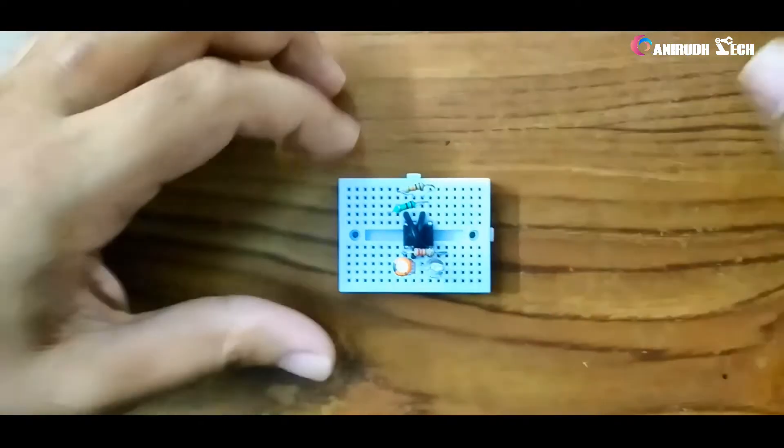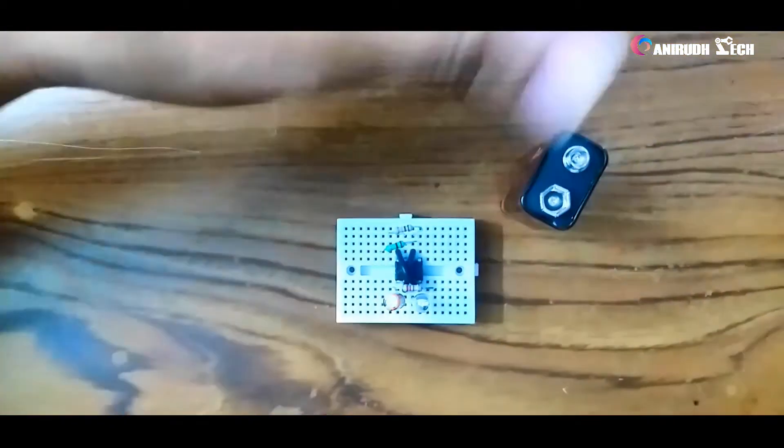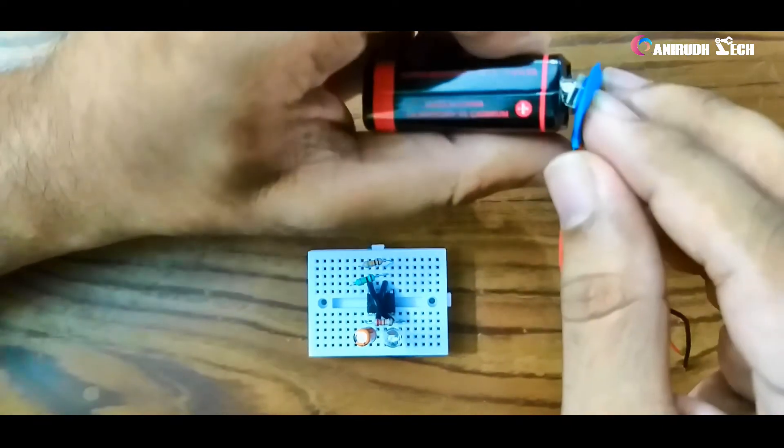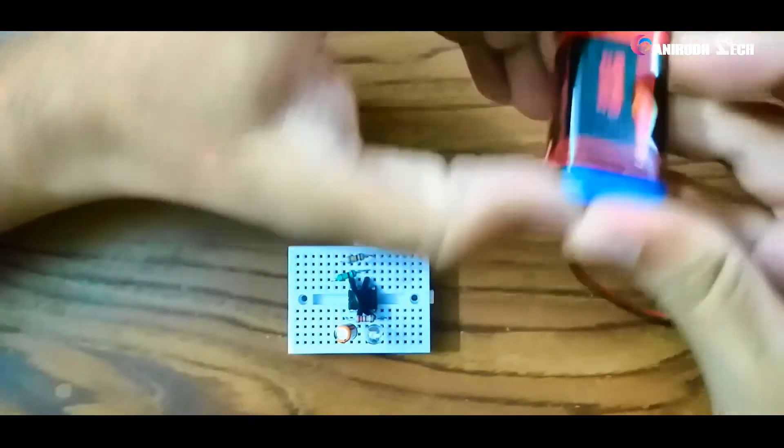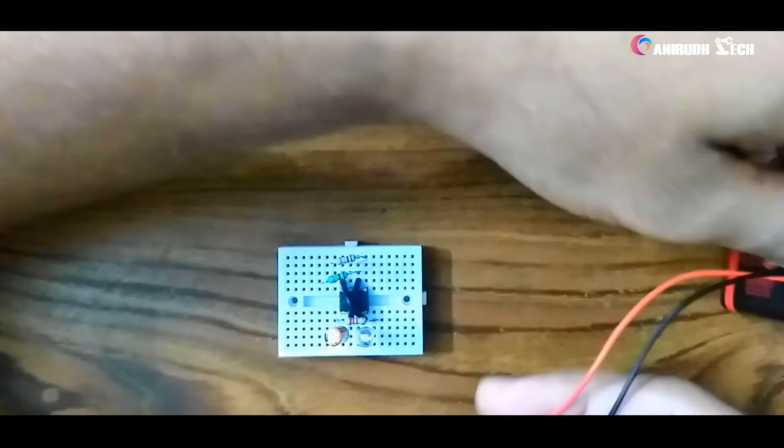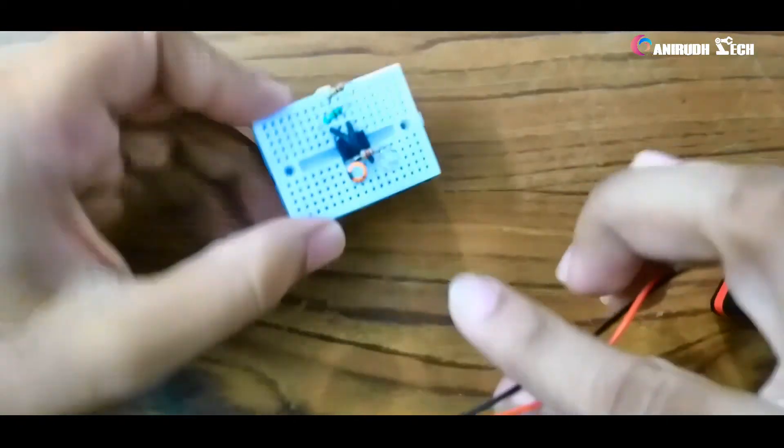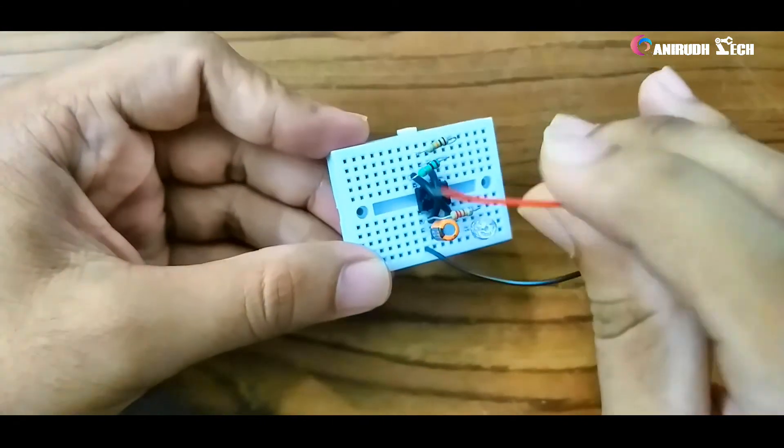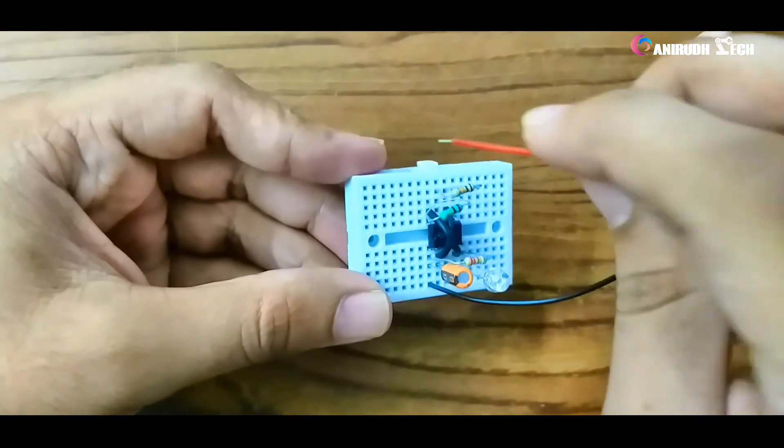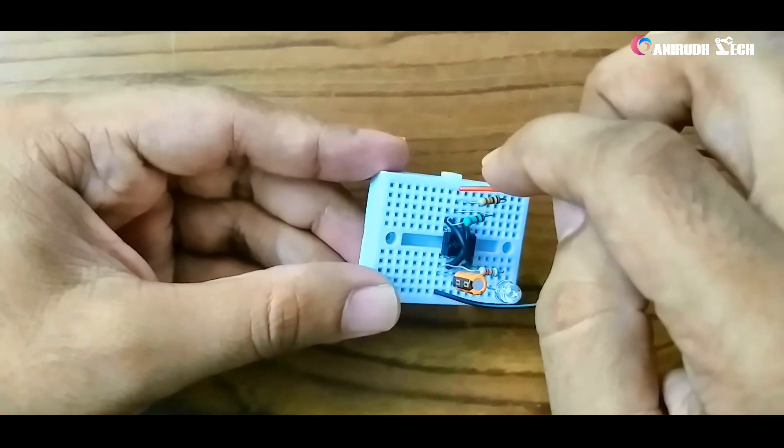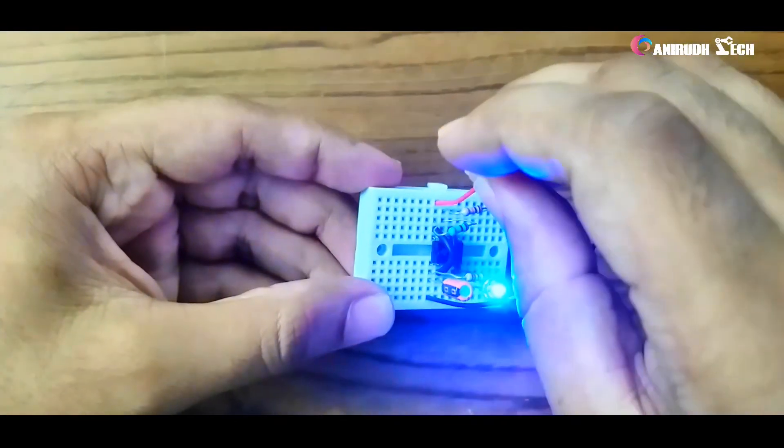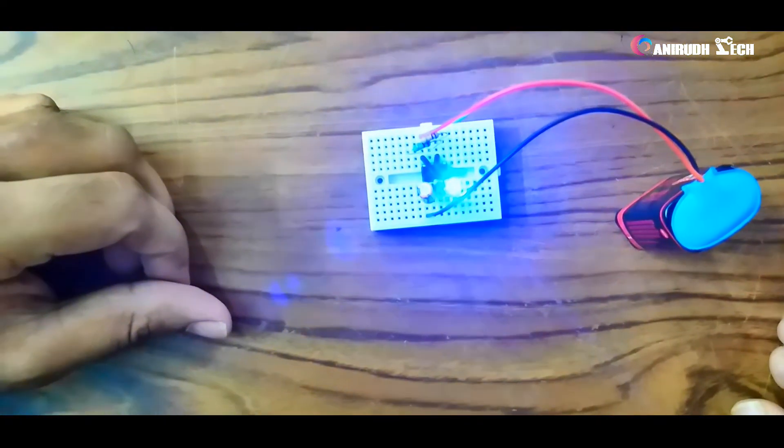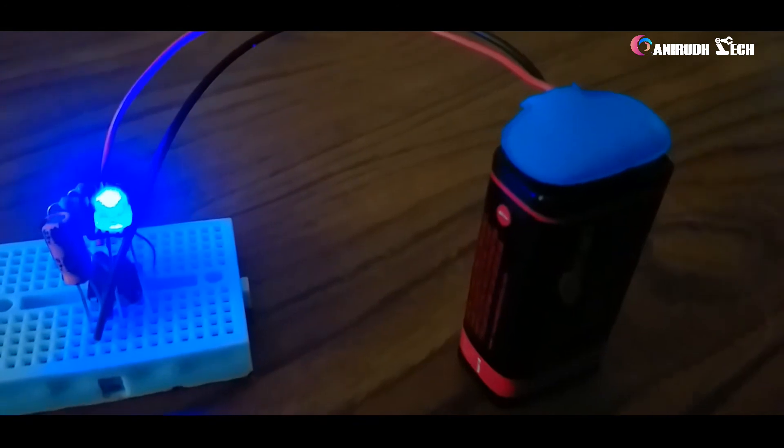Almost done with the connections, now we can power it. Here I am using a nine volt battery. Connect its negative terminal to the first pin of our IC, which is ground, and the positive. We have done it, so I can see this blinking.